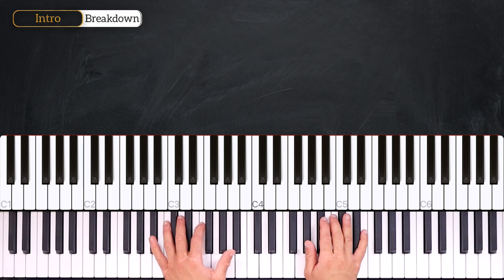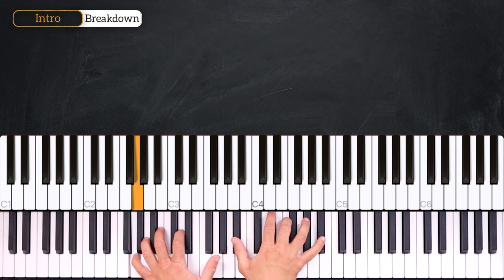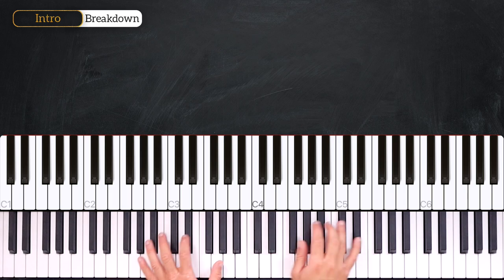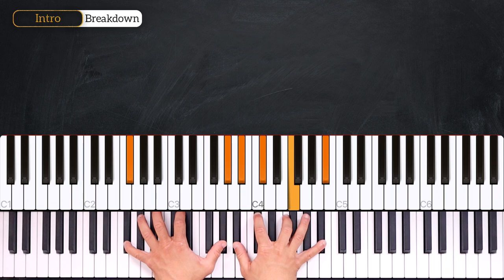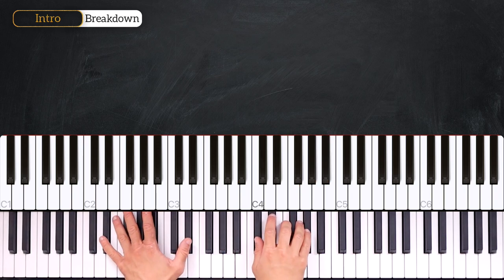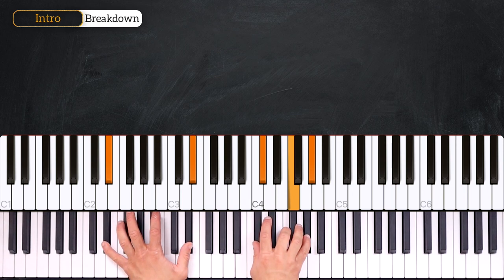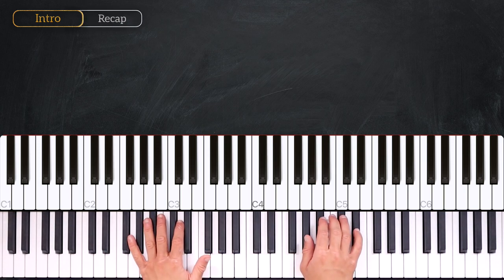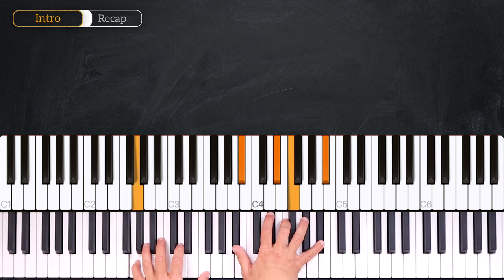And from the top, and this time we do not do the pattern on the left hand. And now we add it back again. Very nice. And here, we'll end on the Eb minor 11, the last chord of this progression. Very nice guys. 1 and 2 and 3.